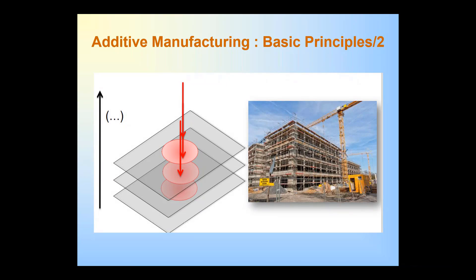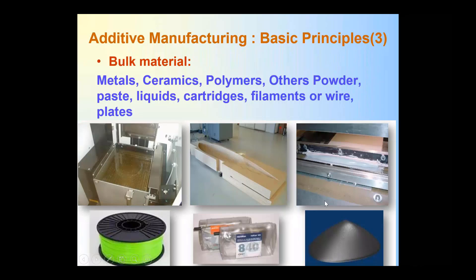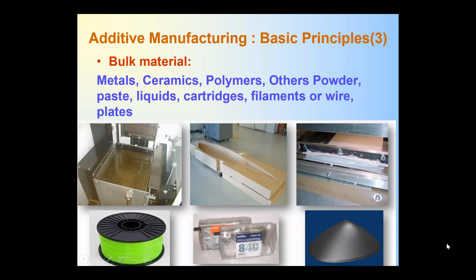Additive manufacturing normally works with bulk material across a wide range of qualities, like metals, ceramics, polymers, powder, liquid, filament, or wire. For special applications in the medical field, which we'll see at the end of the presentation, there is another kind of material which is not a solid one.